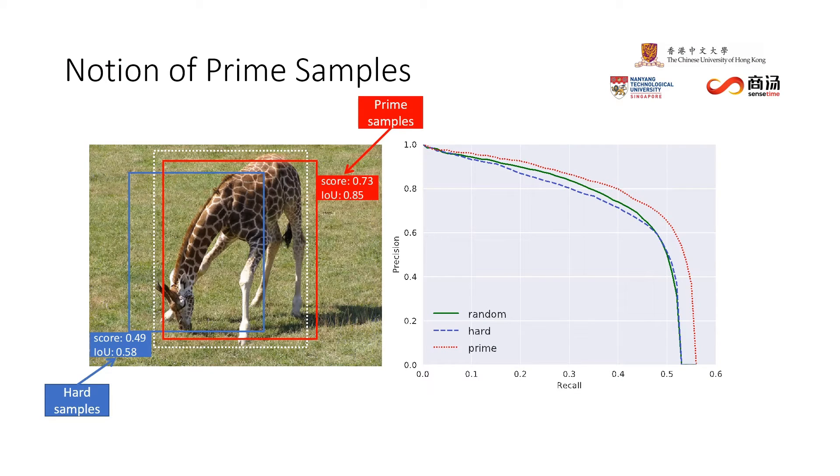In this paper, we found that class imbalance on average does not necessarily result in a bad detector.